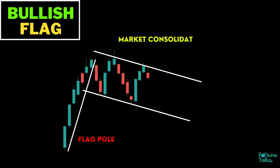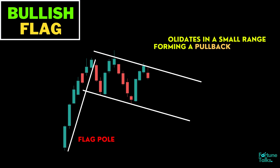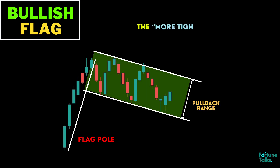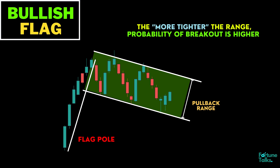After the strong move higher, the market needs to take a break. The market consolidates in a small range, forming a pullback. The pullback consists of smaller range candles. The tighter the range, the higher the probability that the market will break out.